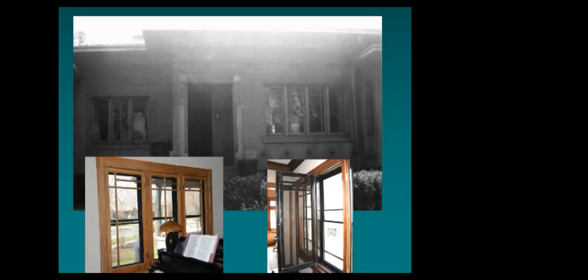The main problem with triple-track storms is that if your window has any unusual character at all, they offer only a 50% opening so there's always a bar cutting across the middle. On this Chicago house, a previous owner installed aluminum triple tracks, and as you can see it really harms the Prairie School design unique to these casement windows.